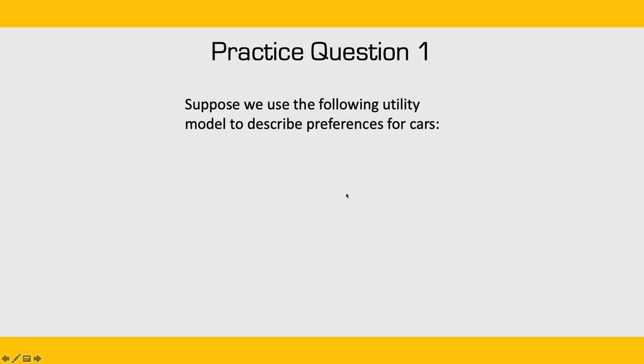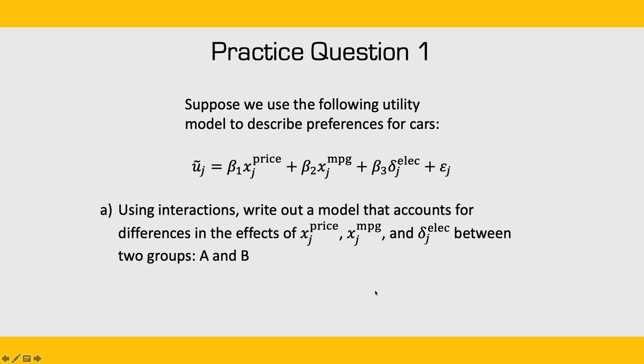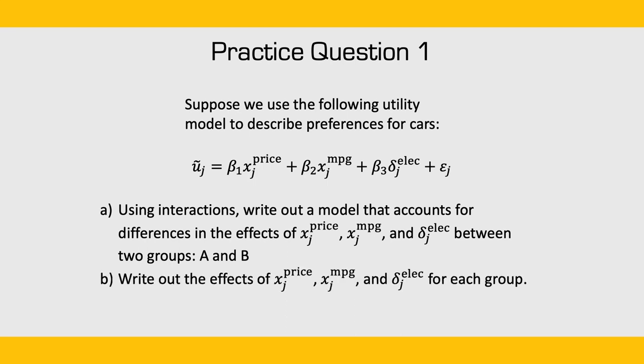For practice question one, let's suppose we use the following utility model to describe preferences for cars. We have a price attribute, a fuel economy attribute in miles per gallon, and a dummy coefficient elect, which takes 1 if the vehicle is an electric car and 0 otherwise. For part A, using interactions, write out a model that accounts for differences in the effects of price, fuel economy, and electric vehicle type between two groups A and B. For part B, write out the effects of price, MPG, and electric vehicle type for each group.